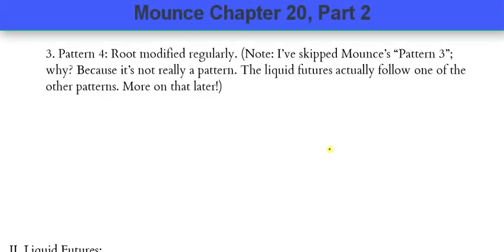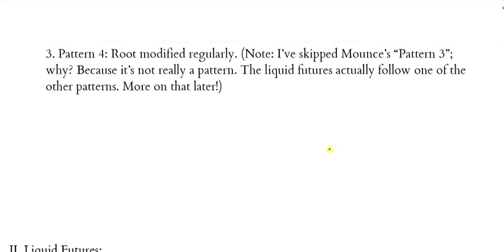Now on your handout we have pattern number four. I've skipped Mounts' pattern three because pattern three is not a real pattern. What we're going to see is that the liquid futures that Mounts calls pattern three actually just follow the other three patterns. I'm going to get you through the third general pattern which he calls pattern four. In this kind of pattern the root is going to be modified in a regular way to form the present stem. It won't be the root unmodified like pattern one, and it won't be from a completely different root. It will be from the root but just with some modifications, and there are rather predictable modifications at that.